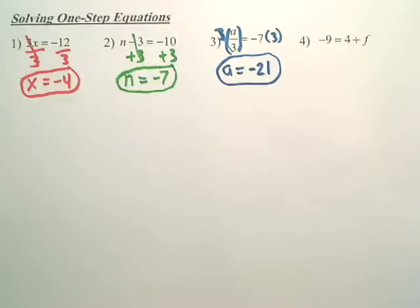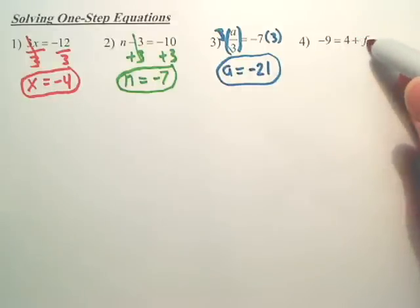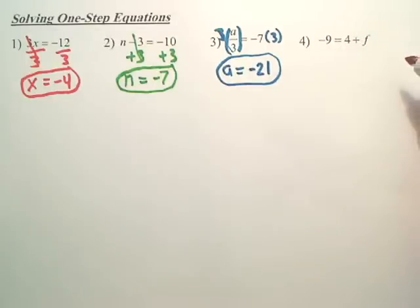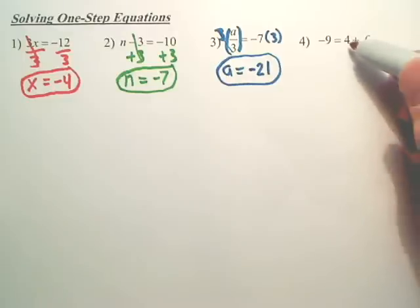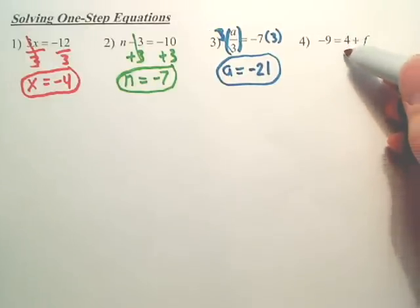And the last one. I want to get F by itself. Or basically, negative 9 equals 4 plus what? Again, that might be too hard for some people to see. So basically, I want to get F by itself. How do you get rid of that 4? How is it connected? It's 4 plus F. So if I want to get rid of that 4, don't you minus it?